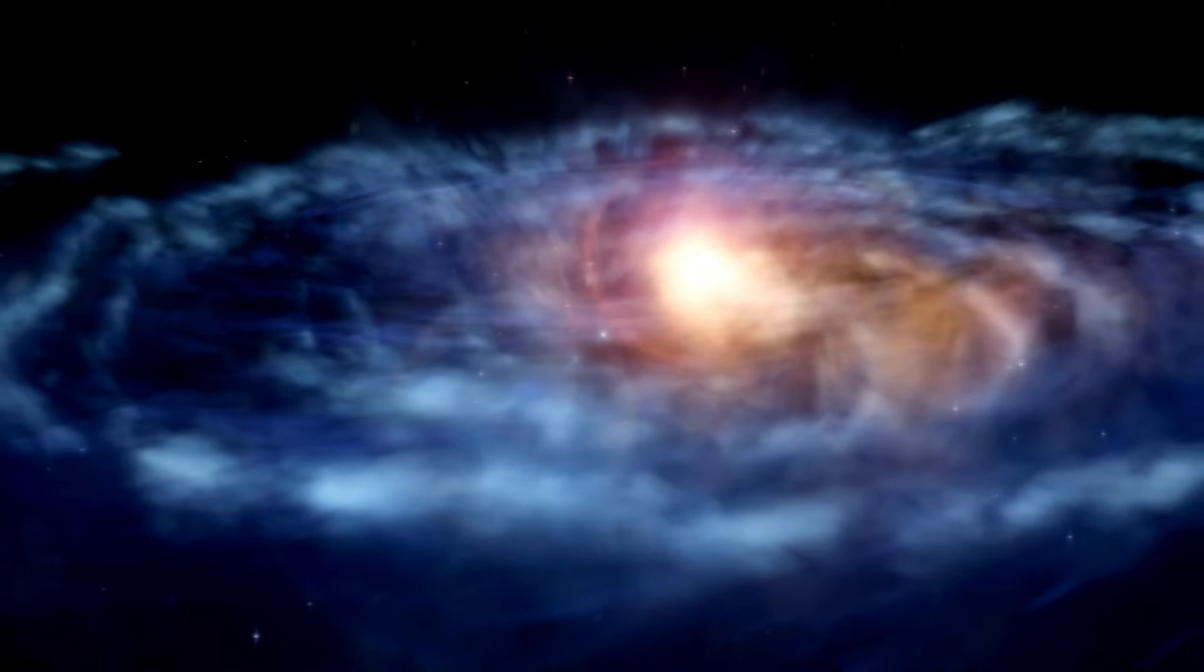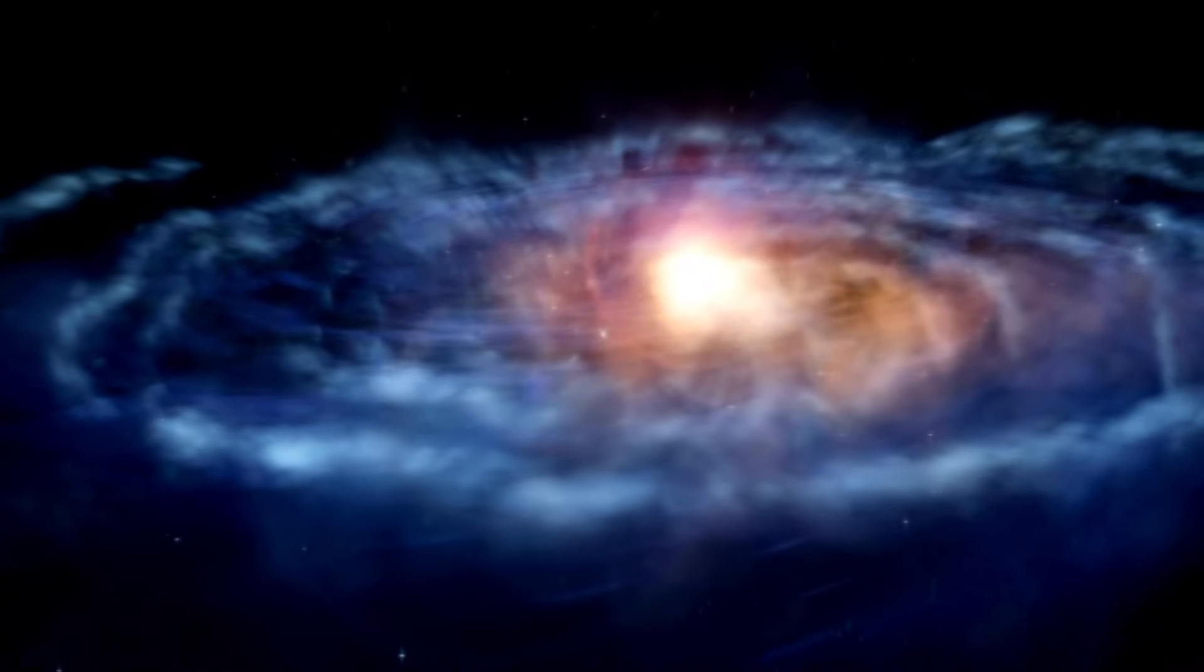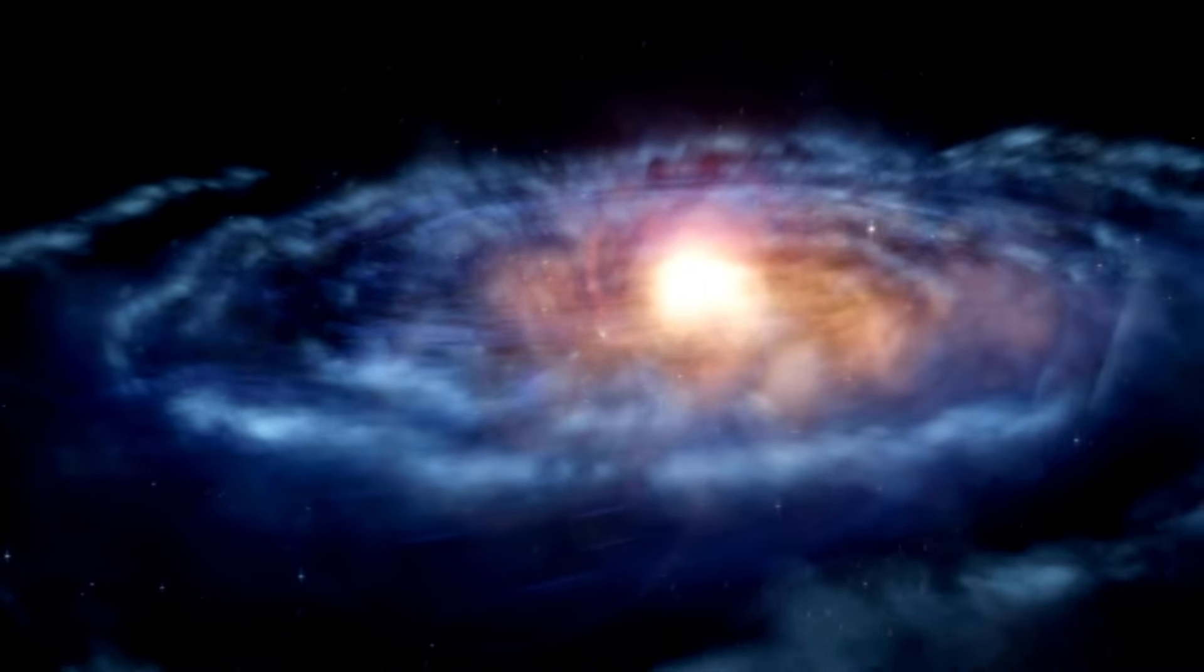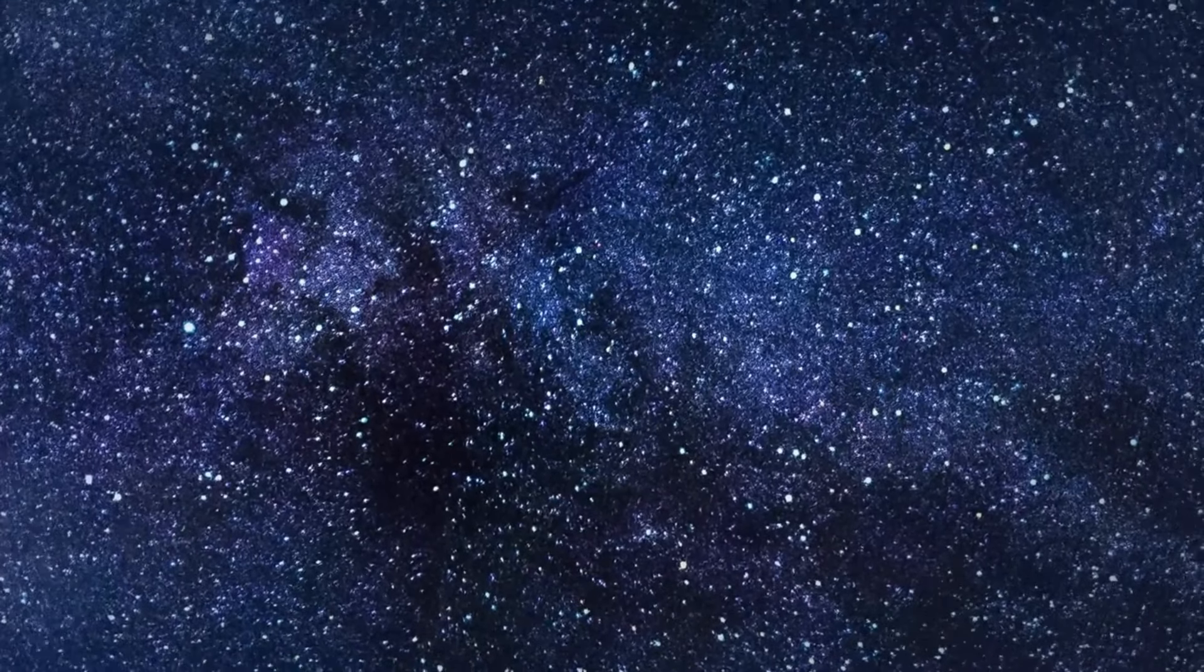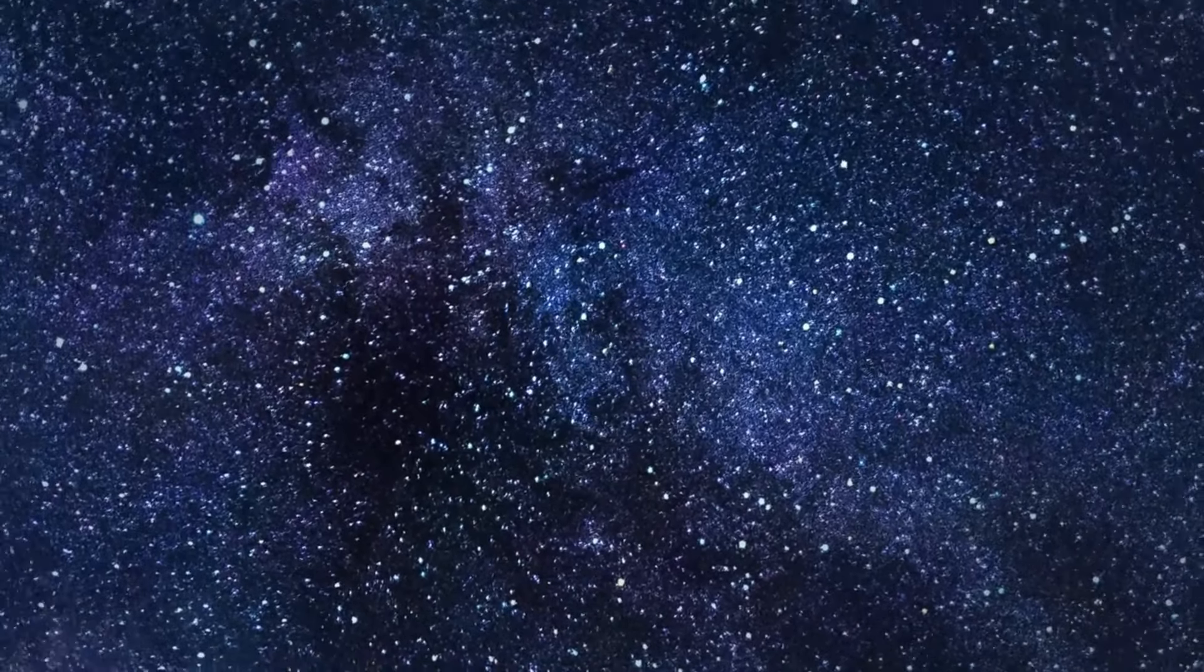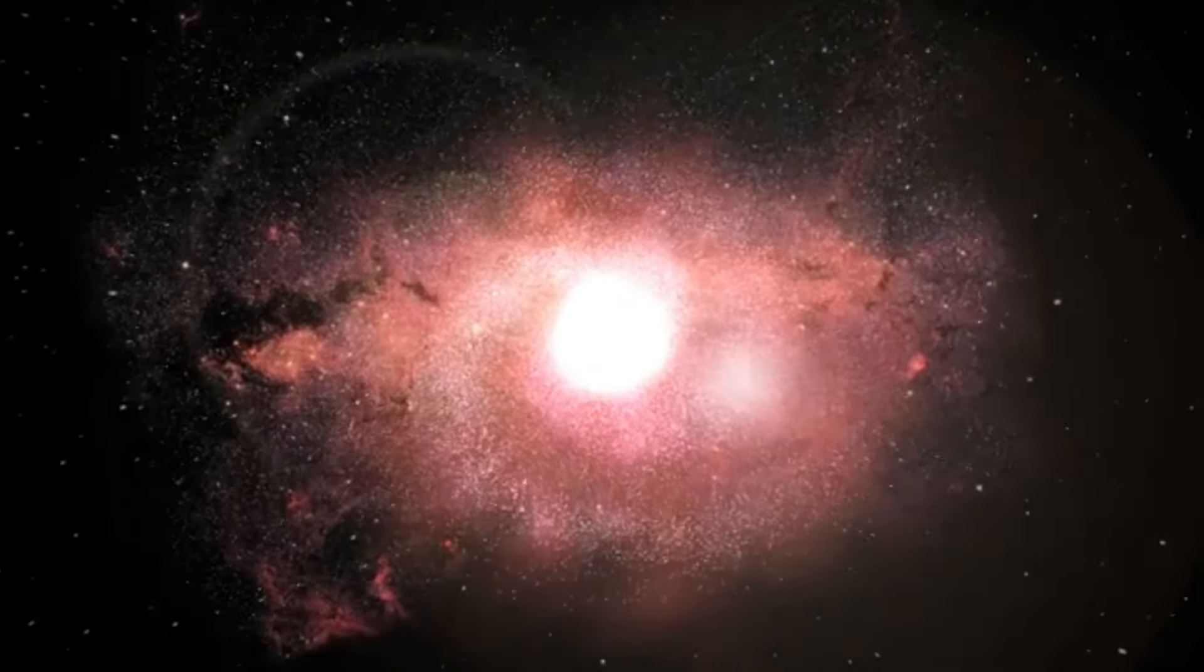Many speculate that Betelgeuse might be approaching the twilight of its life, a supernova event. A supernova is a cataclysmic explosion, an astounding burst of energy that can outshine an entire galaxy momentarily. This phenomenon occurs when there is a sudden change in the star's core. Such changes can arise if a star absorbs too much matter from a neighboring star, or in Betelgeuse's case, it could be from the exhaustion of its nuclear fuel, which cascades its mass into the core, setting the stage for a cataclysmic collapse.